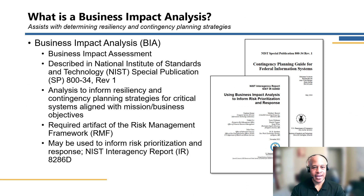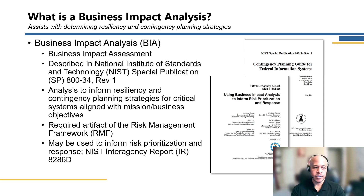A business impact analysis, sometimes referred to as a business impact assessment or BIA, is essentially an analysis performed to inform the contingency planning and resiliency for critical systems, aligned with the business or mission objectives of an organization. The BIA is a key artifact of the risk management framework, described in NIST 800-34, which is the contingency planning guide for federal information systems, and the BIA is a key component to drive that contingency planning forward.